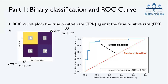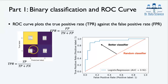In binary classification we have two classes: negative (−1) and positive (+1). A confusion matrix for binary classification is a two-by-two matrix where each row corresponds to the true label and each column corresponds to the predicted label. We have four cases: true negative (originally negative, predicted negative), true positive (originally positive, predicted positive), false positive (actually negative but predicted positive), and false negative (actually positive but predicted negative).